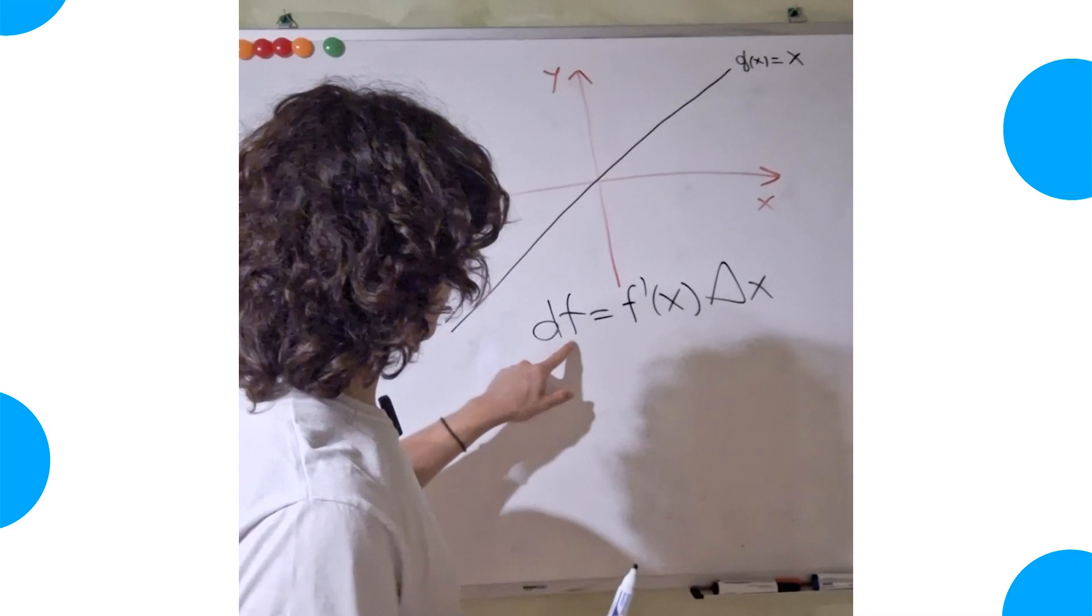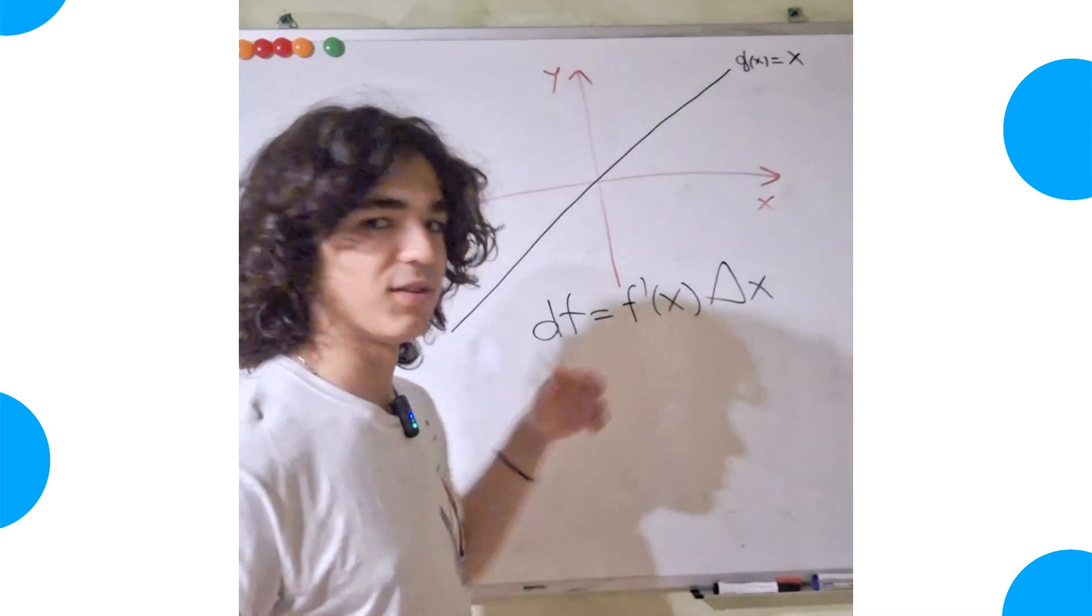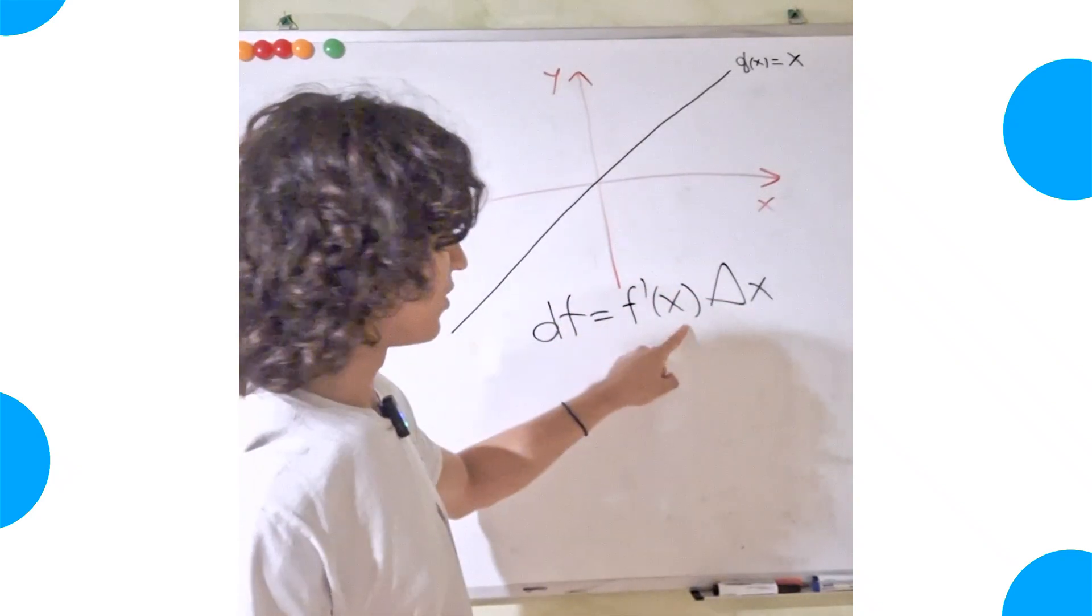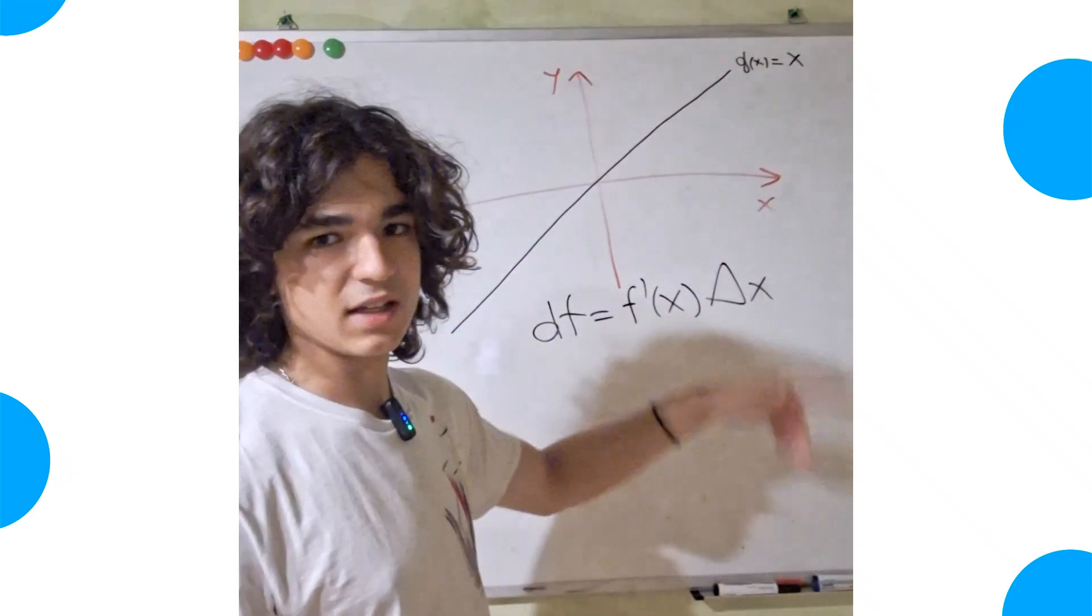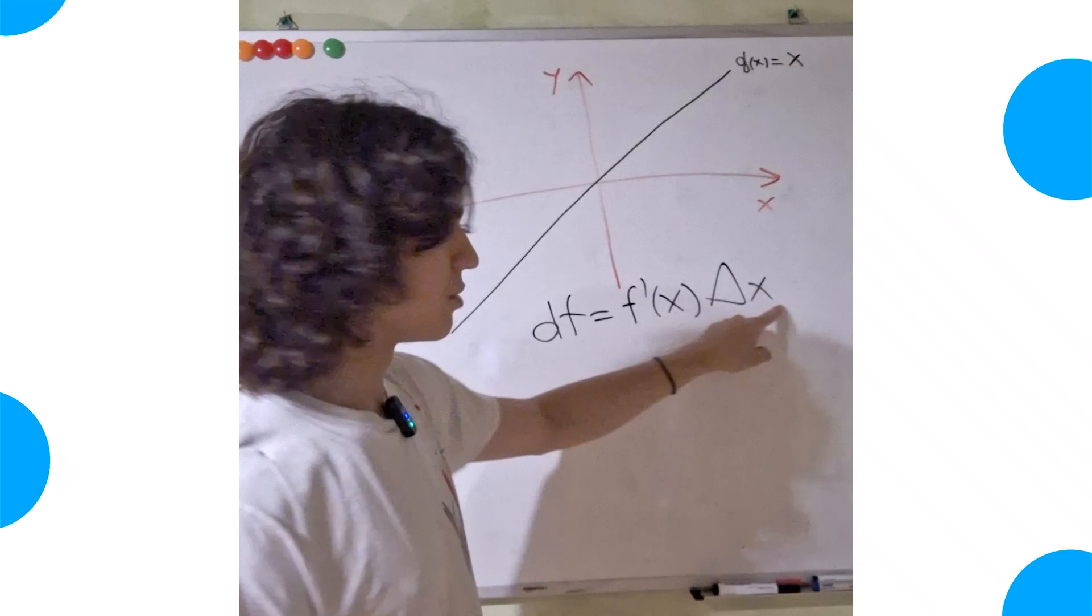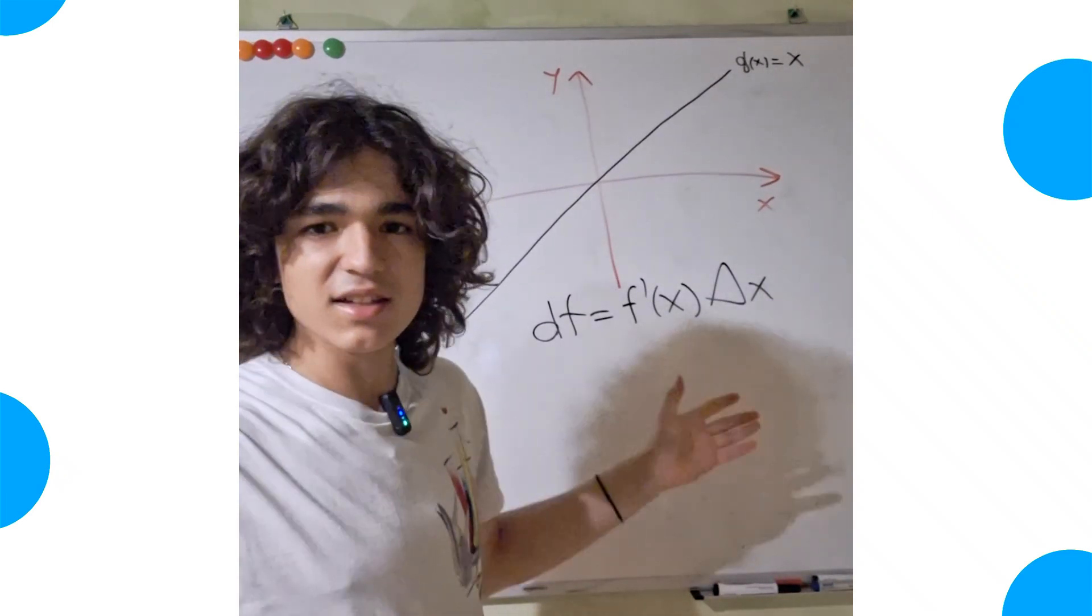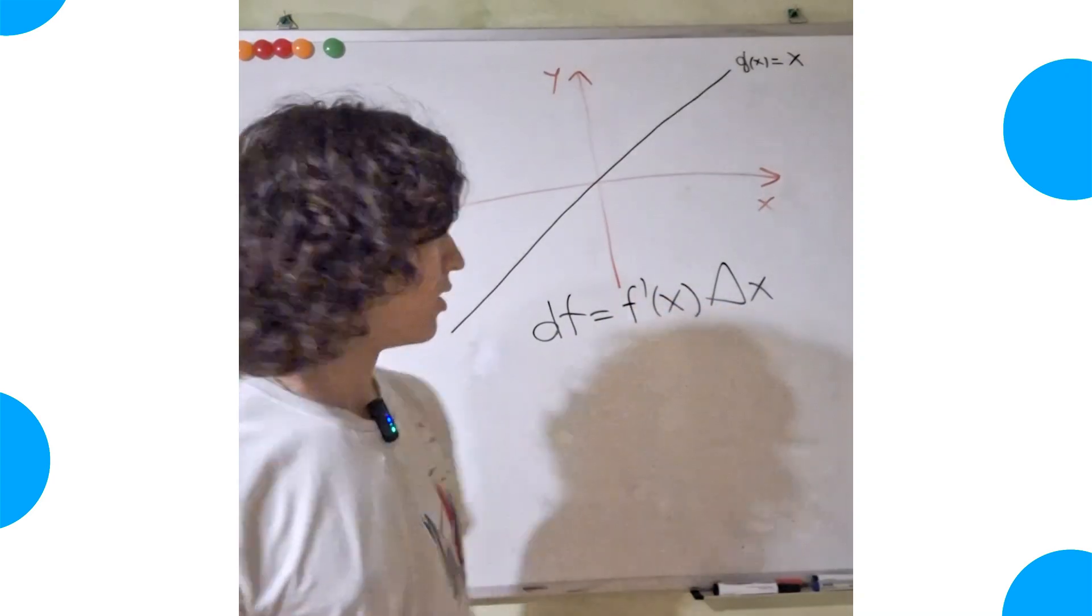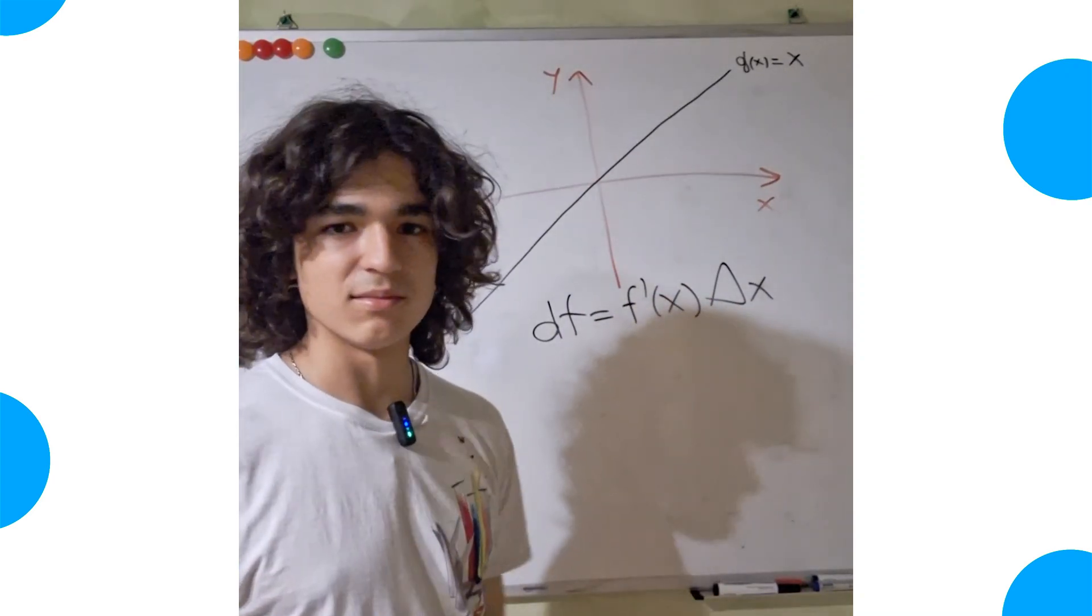So we have that the differential of a function, the linear increment of the function, equals the derivative of the function at some point times this increment delta x. And this delta x is just a normal delta x, the finite difference we're all familiar with.